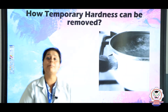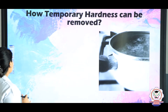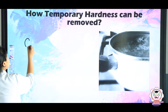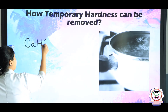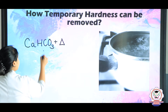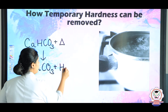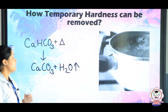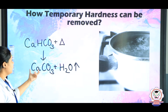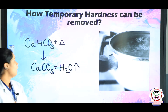Now let us see how you can remove temporary hardness of water. Temporary hard water has bicarbonates present. What you can do is heat the water. Heating calcium bicarbonate gives calcium carbonate plus water as steam. Same way, magnesium bicarbonate on heating gives magnesium carbonate plus steam. This is how you can remove the temporary hardness of water.